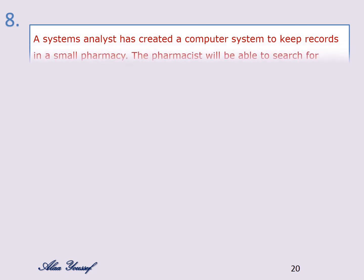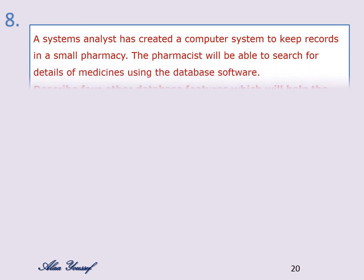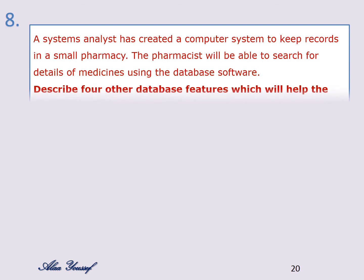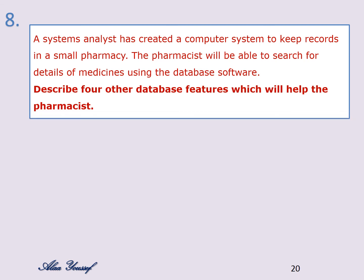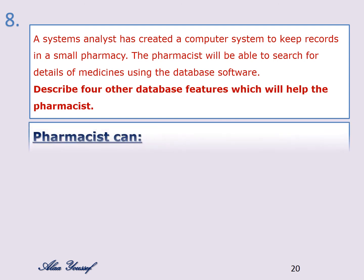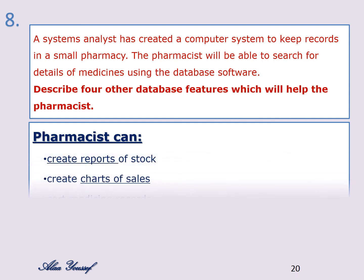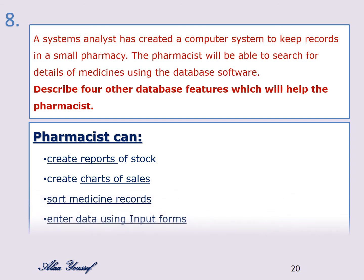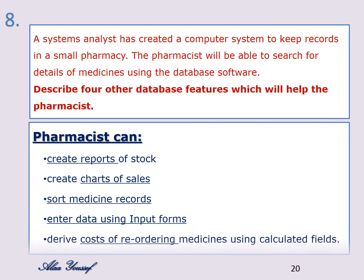Question number eight: a small pharmacy uses database software to search for details of medicines. Describe four other database features which will help the pharmacist. The pharmacist can: create reports of stock, create charts of sales, sort medicine records, enter data using input forms, and derive costs of reordering medicines using calculated fields.